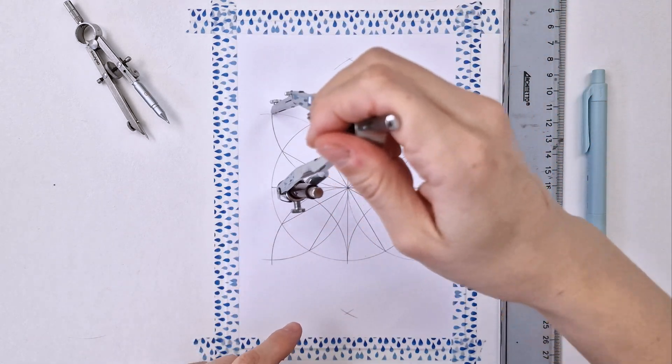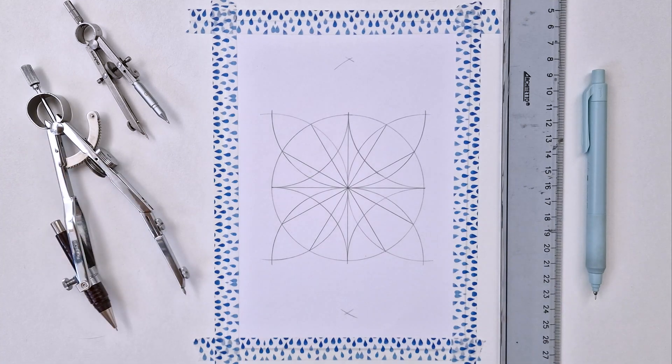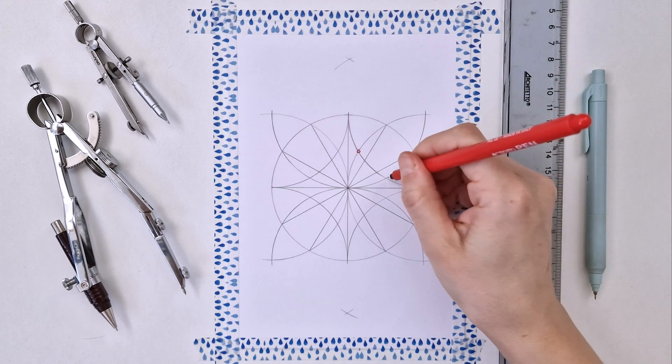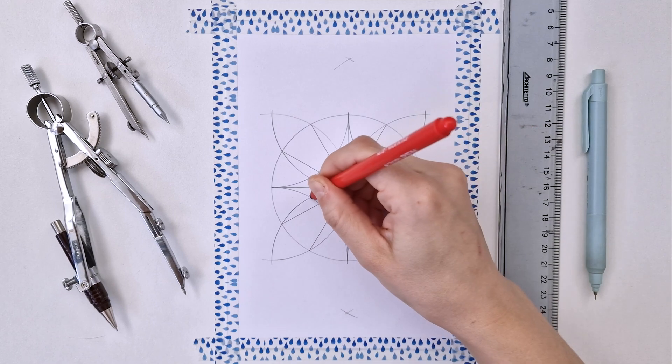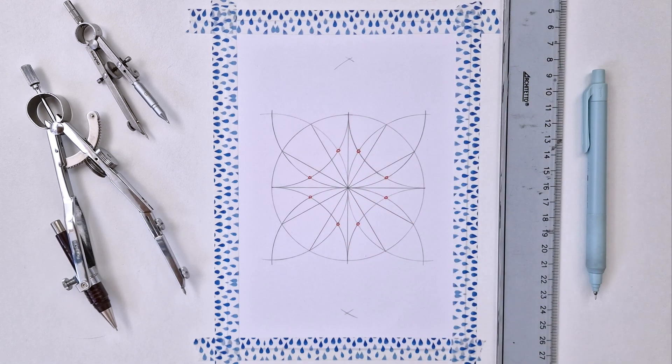These four arcs intersect with the semicircles into eight points, and I'm going to use this red color to mark the points so that you can see them clearly. So what is left for us is to align the ruler to opposite points.